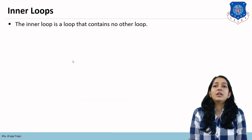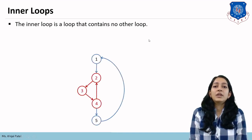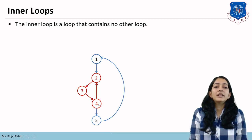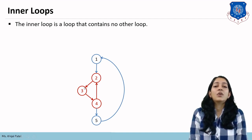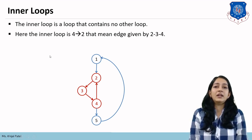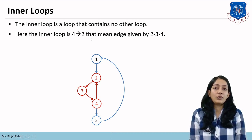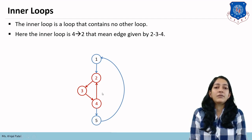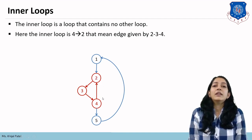An inner loop is a loop that contains no other loop. In this graph, there are two backward edges forming loops: 5→1 and 4→2. The loop from 5→1 also contains the inner loop from 4→2, which consists of nodes 2, 3, 4. Since there is no other loop inside the loop formed by edge 4→2, we say that 2, 3, 4 is the inner loop.